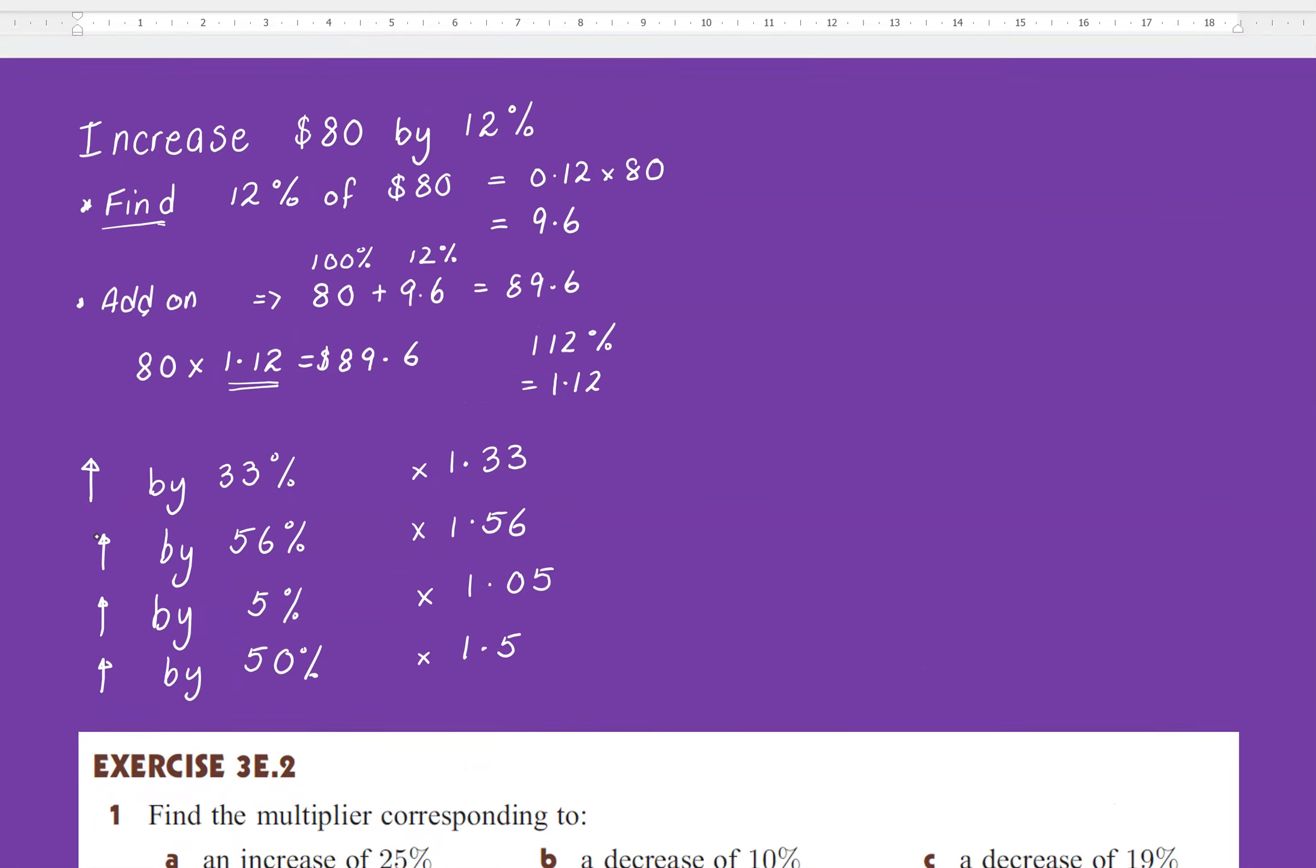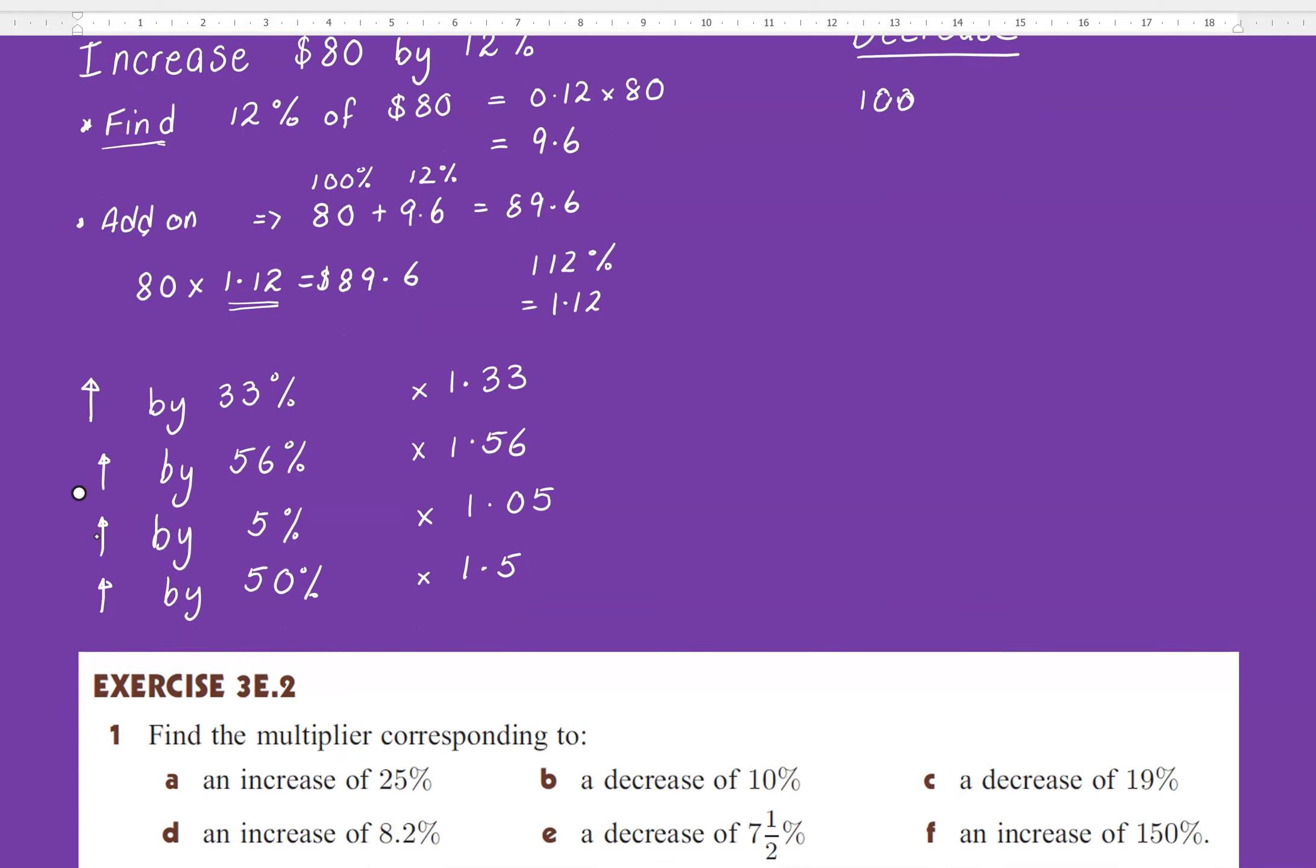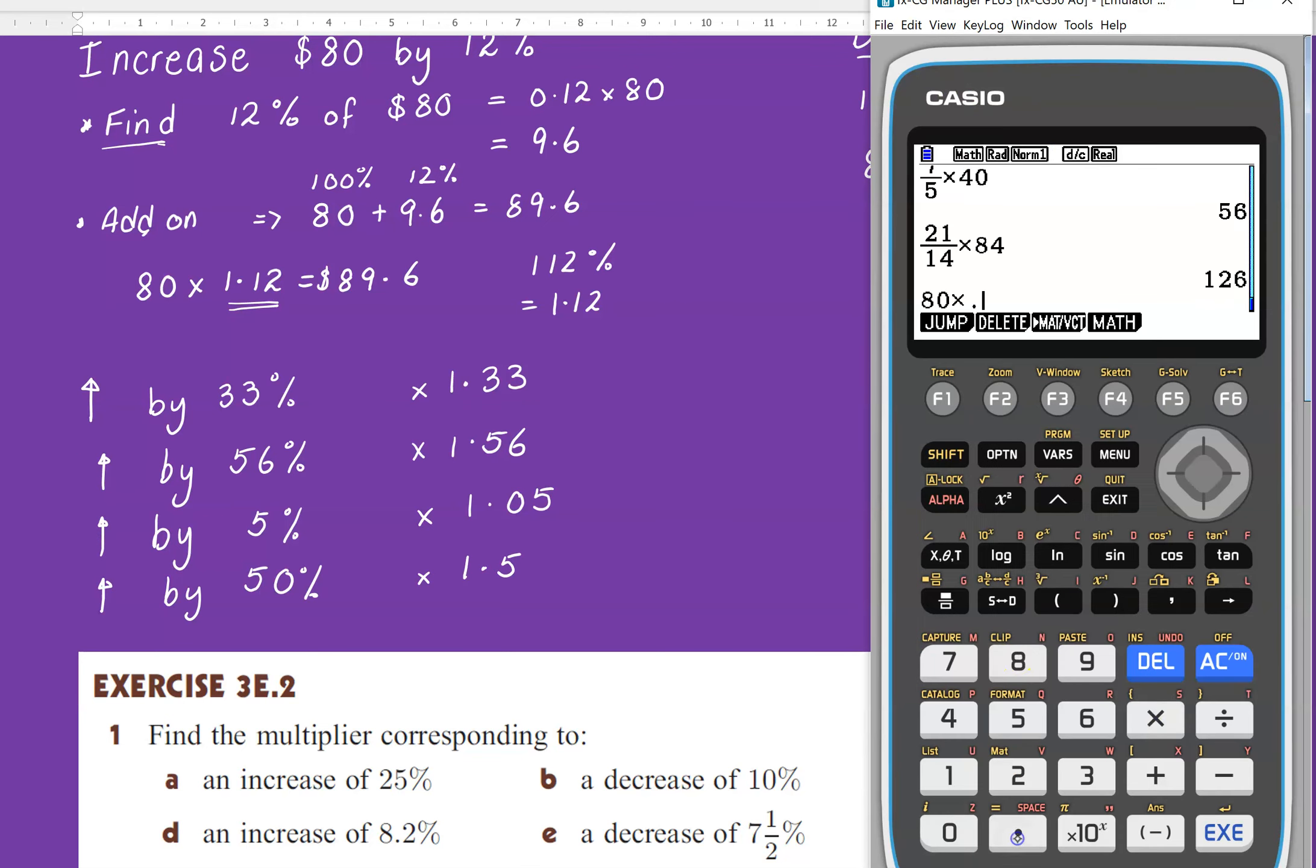So now, when we want to decrease, can you think of what your multiplier would be there now? When we increased, we said 100 plus 12. Well, if we decrease, we're going to say 100 take 12, which will be 88%. So let's have a look, what happens if we multiply 80 by 0.88, what do we get? So 80 times 0.88, we get 70.4, which isn't that the same as if we had 80 minus 9.6, which is what our 12% is. You get the same answer.